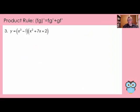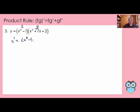I have one more product rule example. These are two polynomials — they're just going to take a little bit more algebra work. This function is f and this function is g. Y prime equals f — I just copy the function f — times g prime. The derivative of the second factor would be 2x plus 7.